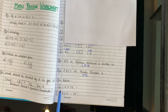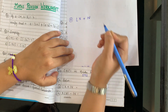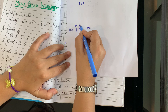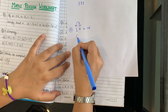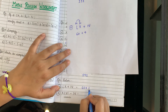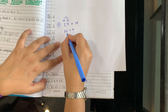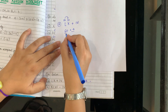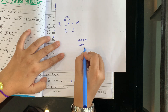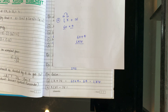Next question: solve LX + IV. L is 50, X is 10 — bade ke baad chota — add: 60. IV kya hota hai? 4. So 60 + 4 = 64. Now write 64 in Roman: 60 is LX, 4 is IV. Answer: LXIV.